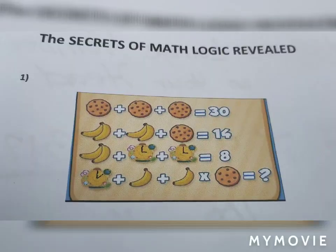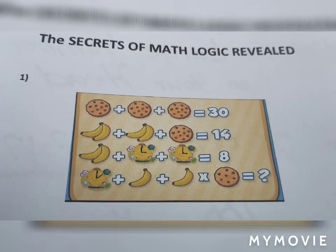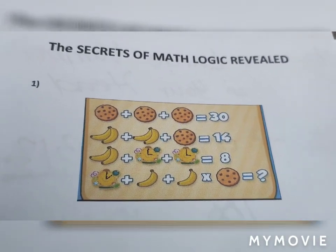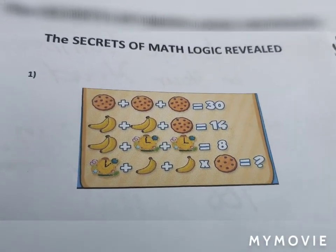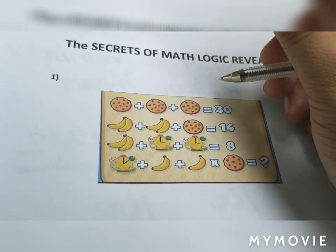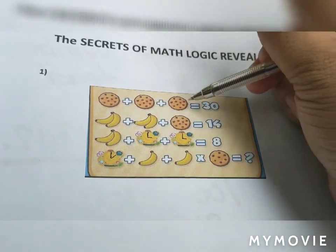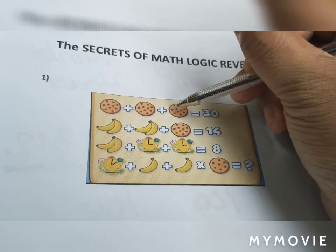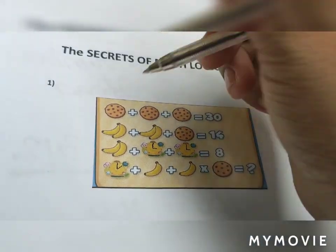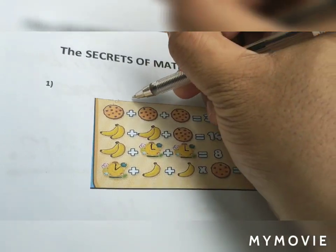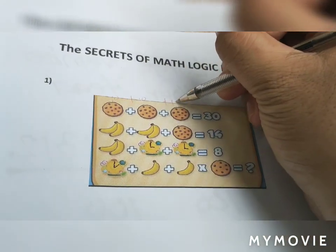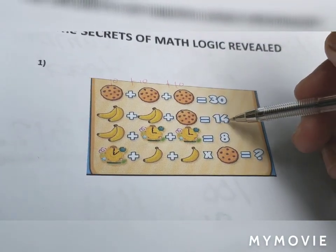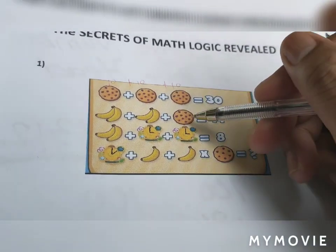Let's now have the secrets of math logic revealed. In figure number one, what is the answer? For the technique, you are going to count the spots. For equation number one, as you can see there are one, two, three... ten — there are 10 spots. So this is equivalent to 10 plus 10 plus 10, which is equal to 30.